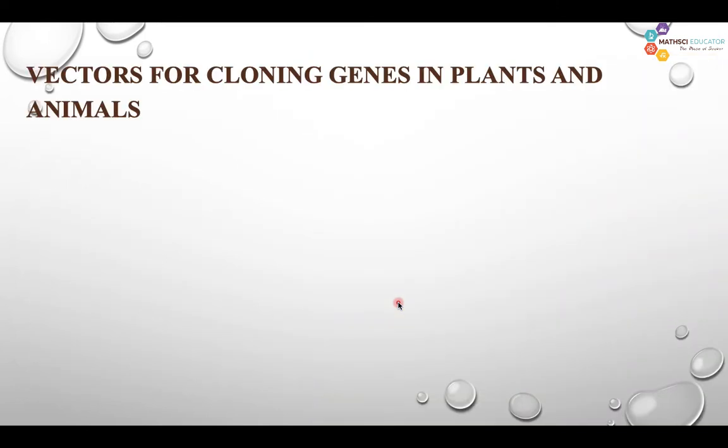Now, vectors for cloning genes in plants and animals. Up until now, the vectors we have discussed were all regarding bacteria. But now we talk about vectors that are mostly used for plants and animals. Why do we need to create different types of vectors for recombination in plants and animals? Because plants and animals are both eukaryotic cells, so they have different mechanisms and different structures.